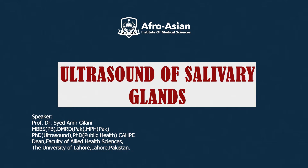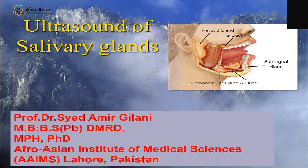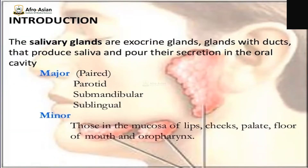Ultrasound of Salivary Glands. Salivary glands are exocrine glands — glands with ducts that produce saliva and pour their secretion into the oral cavity. There are two types of salivary glands: major, which are paired, meaning on the right and left side of the face. They include the parotid gland, submandibular gland, and sublingual gland.